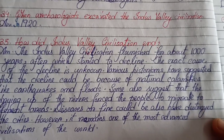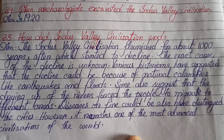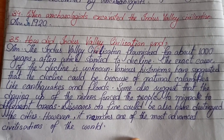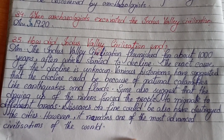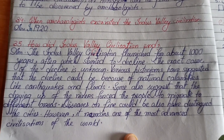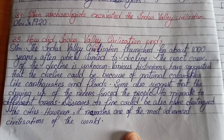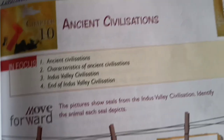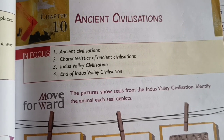The Indus Valley Civilization flourished for about a thousand years, after which it started to decline. The exact cause of the decline is unknown. Various historians have suggested that the decline could be due to natural calamities like earthquakes and floods. Some suggest the drying up of rivers forced people to migrate. Diseases or fire could also have destroyed the cities. However, it remains one of the most advanced civilizations of the world.